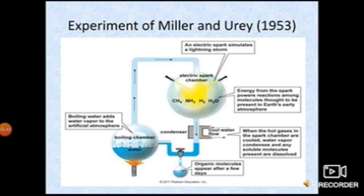In the second flask, there was a mixture of ammonia, nitrogen, methane, and hydrogen — resembling the primitive atmosphere. To this second flask, high-voltage electric discharge was applied, which resembled lightning and thunderstorms in early earth, and provided energy for various chemical reactions.